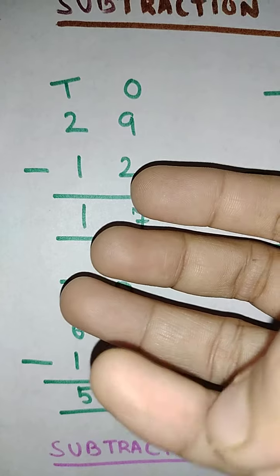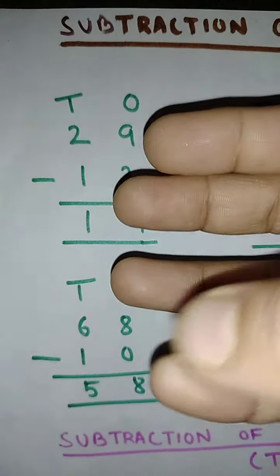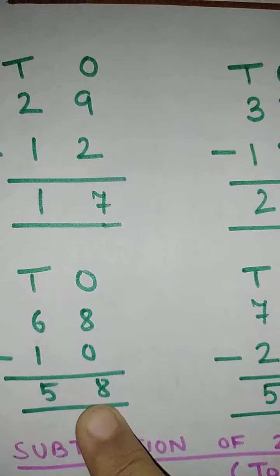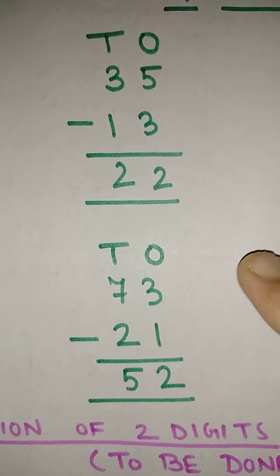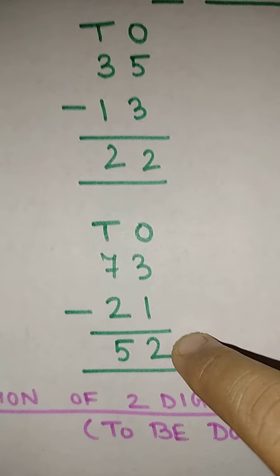And here we have started my counting. Let me do it, 2, 3, 4, 5, 6. So my answer is 58. In the same way I have done this one 73 minus 21.